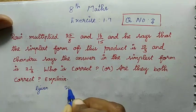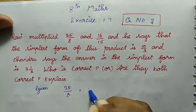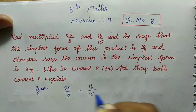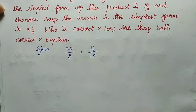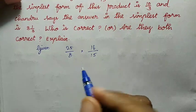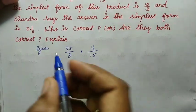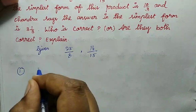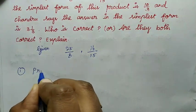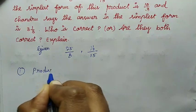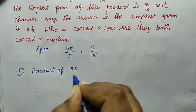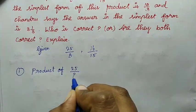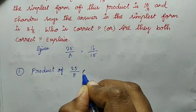Given rational numbers: 25 divided by 8 and 16 divided by 15. We will try two methods. First method: Product of multiplication.